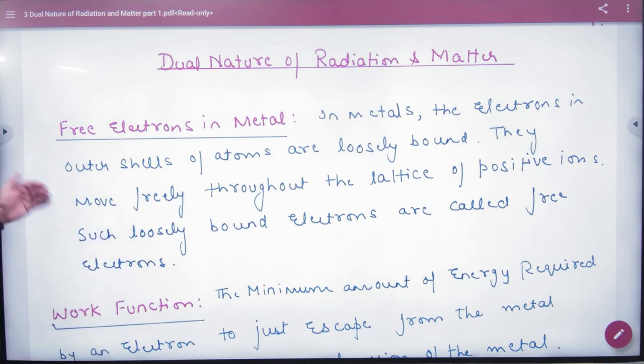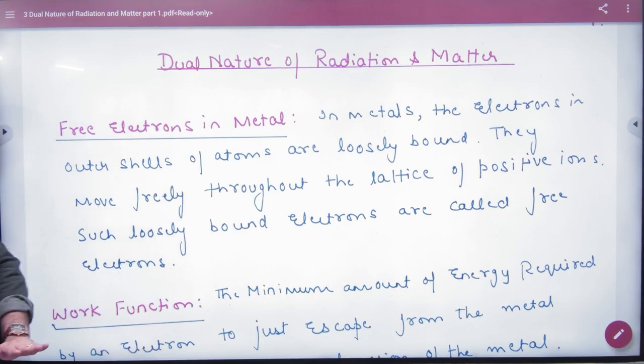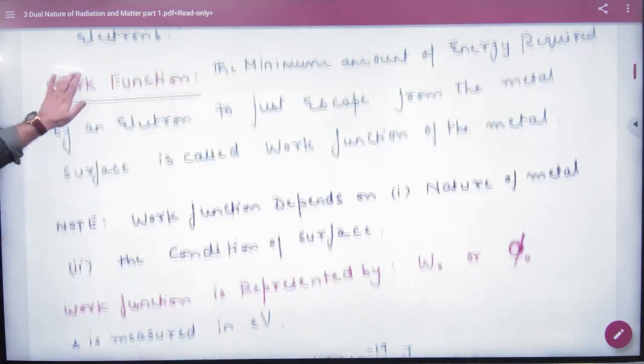So in this case, first of all, this is the story of free electrons. Obviously, this is the question of what will come. You just need to know that metals have some free electrons that move in the lattice, which make free electrons in the lattice, and with the nucleus, they are loosely bound.